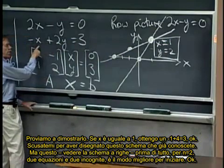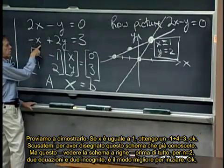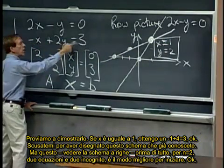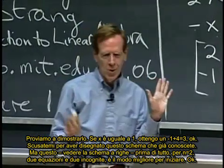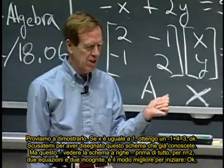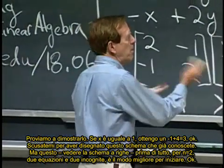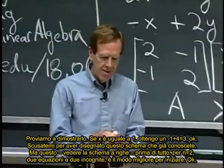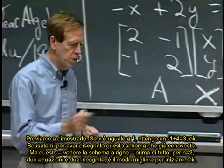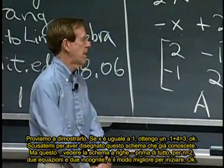Let's just check this. If x is one, I have a minus one plus four equals three. Okay, apologies for drawing this picture that you've seen before. But this seeing the row picture, first of all, for n equal two, two equations and two unknowns, it's the right place to start.